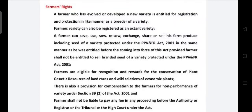A farmer who has evolved or developed a new variety is entitled for registration and protection in like manner as a breeder of a variety. Farmers' variety can also be registered as an extant variety. A farmer can save, use, sow, re-sow, exchange, share, or sell his farm produce including seed of a variety protected under the PPV and FR Act 2001, in the same manner as before the Act came into force, provided the farmer shall not be entitled to sell branded seed of a variety protected under the Act.